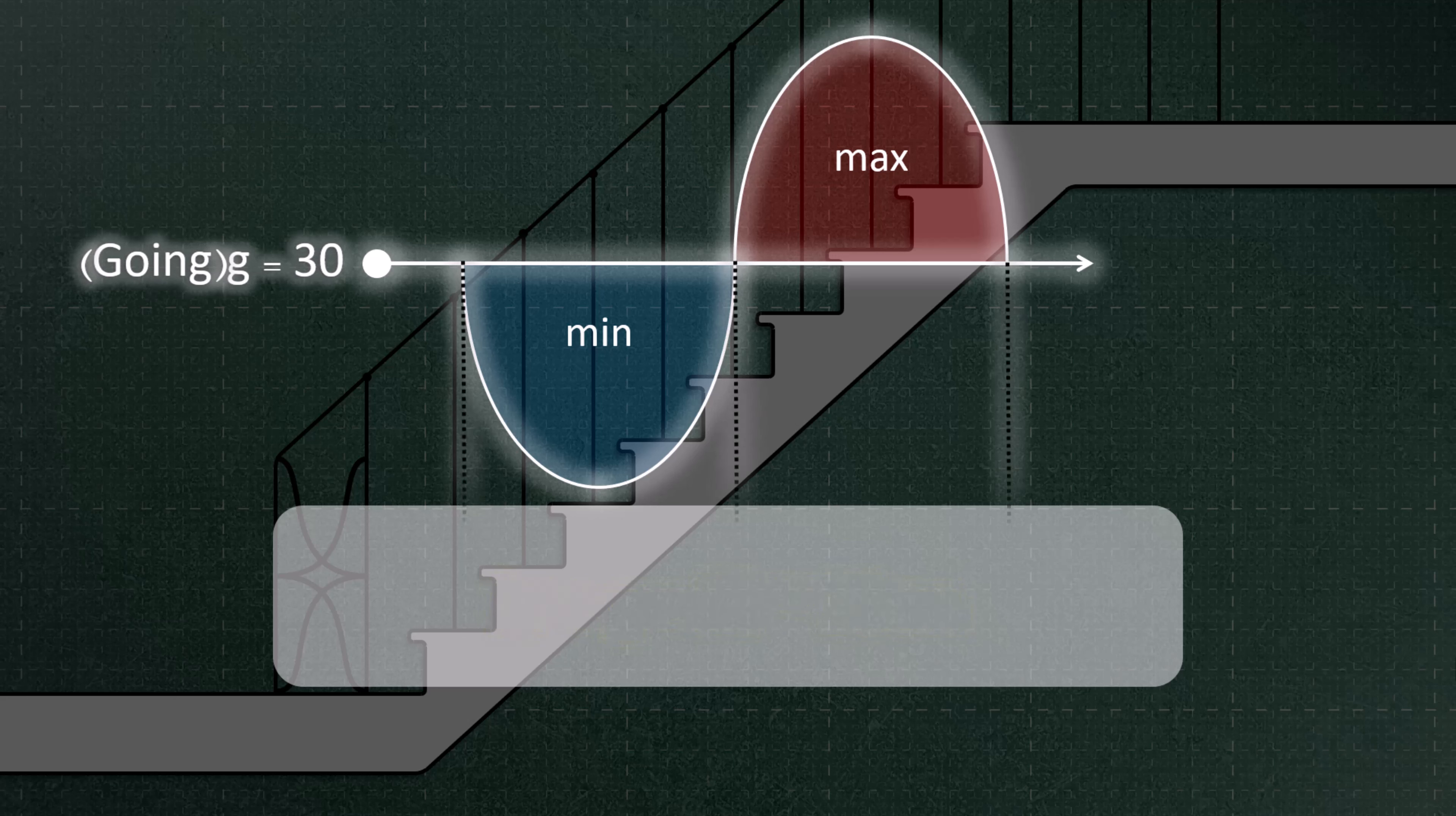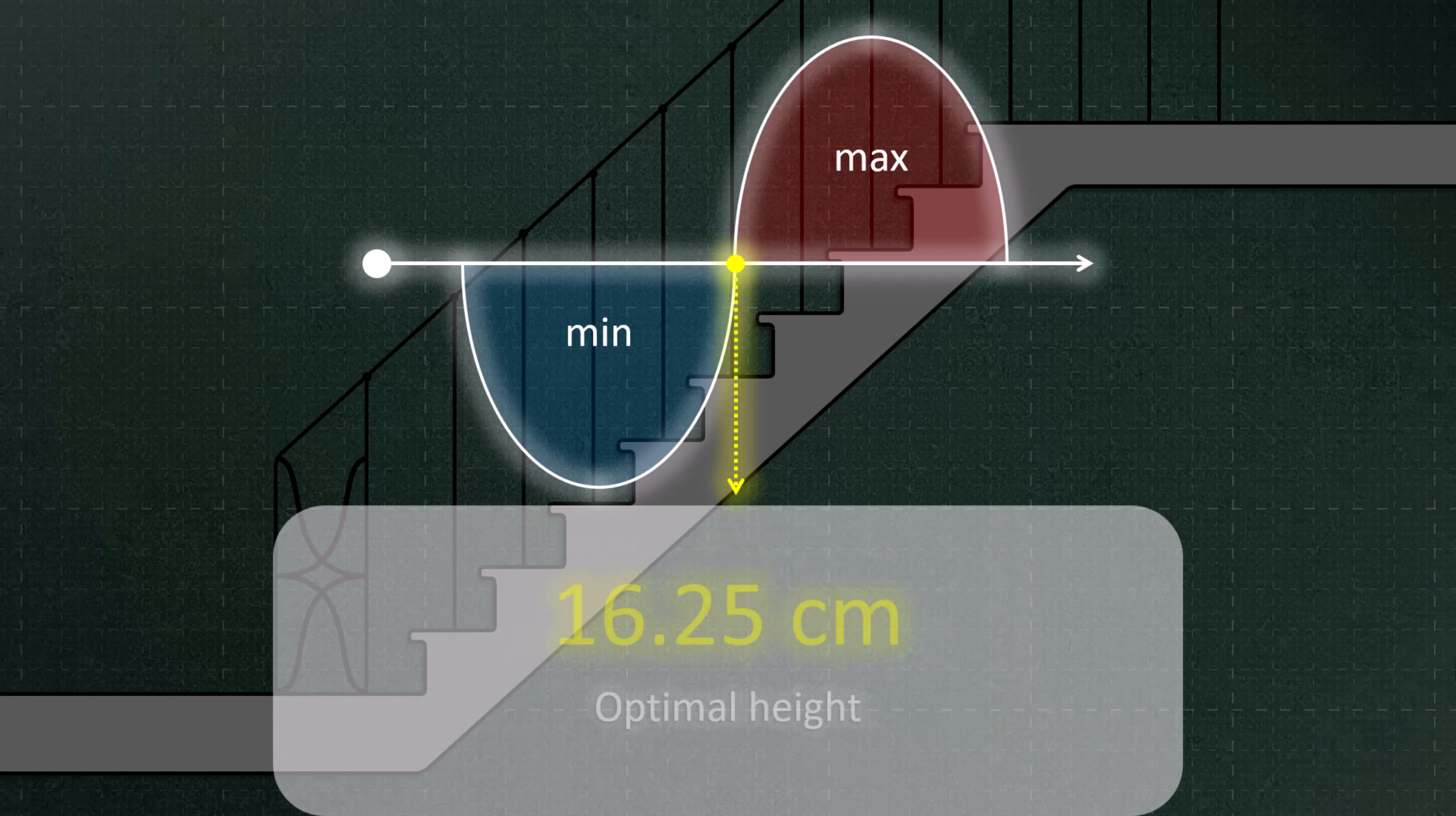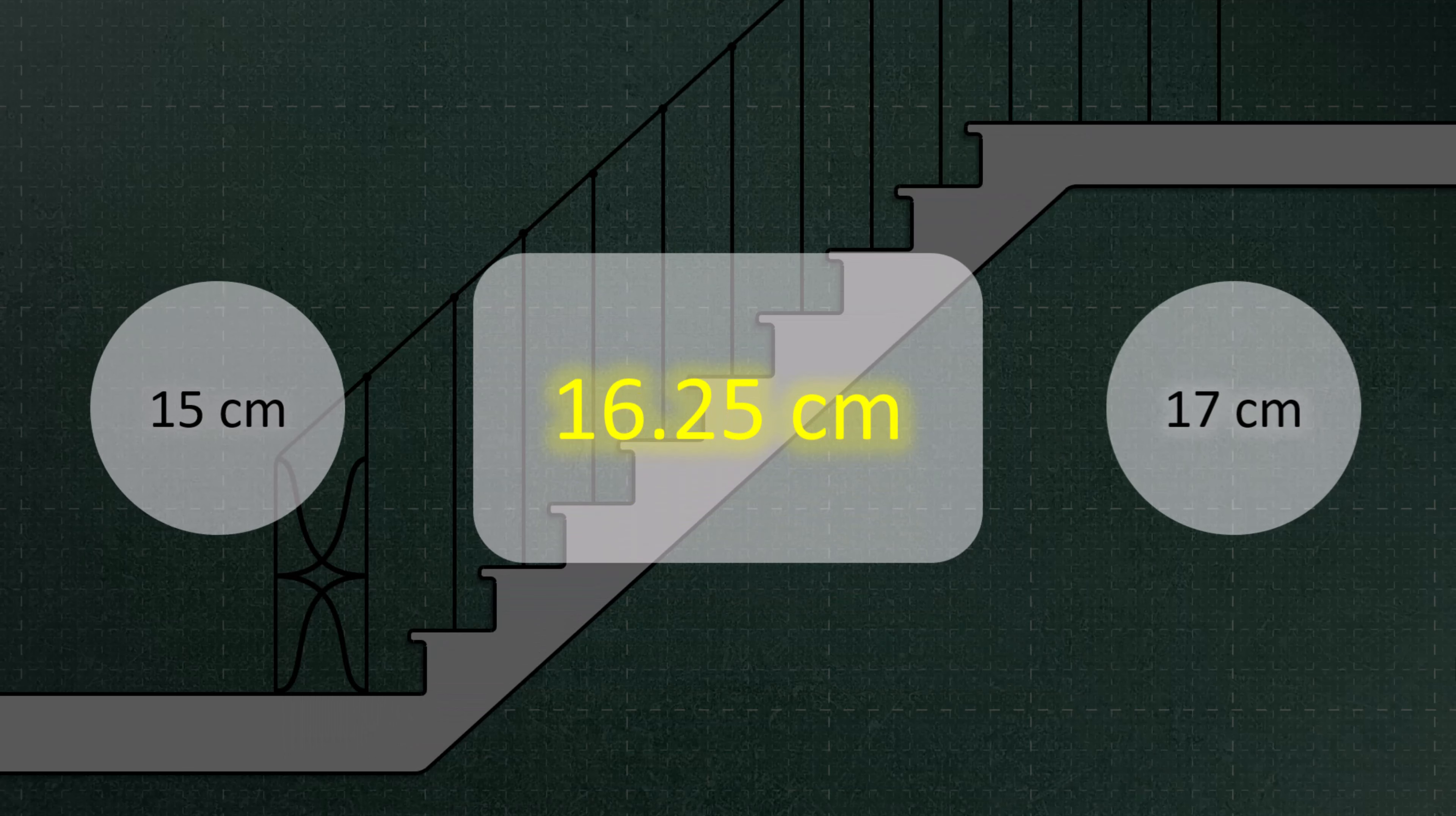If the going of our stairs is 30 centimeters, then the rise of our stairs will fall between 12.5 and 20 centimeters. Adding these two numbers together and dividing by two yields 16.25, which represents the optimal height for the stairs. However, for practical purposes, it is recommended to consider using either 15 centimeters or 17 centimeters for your designs.